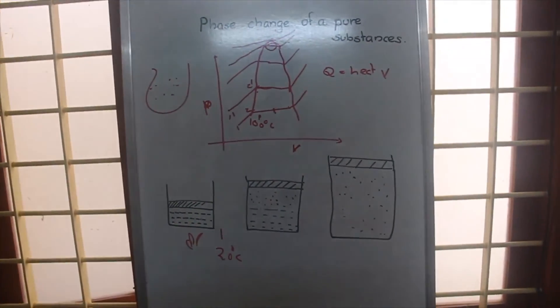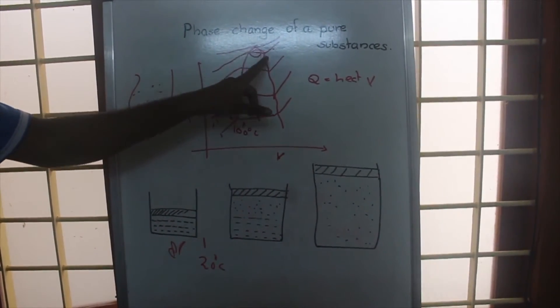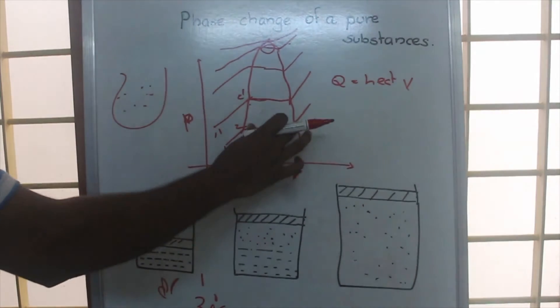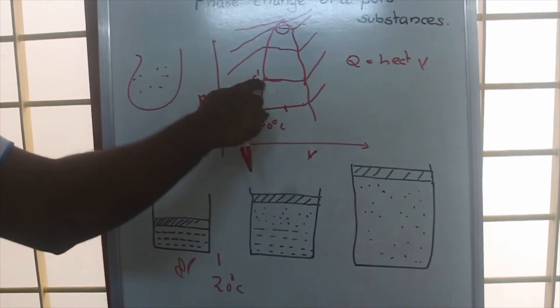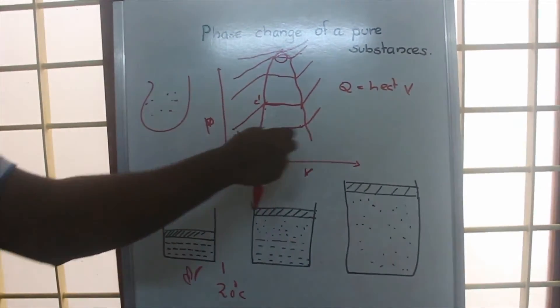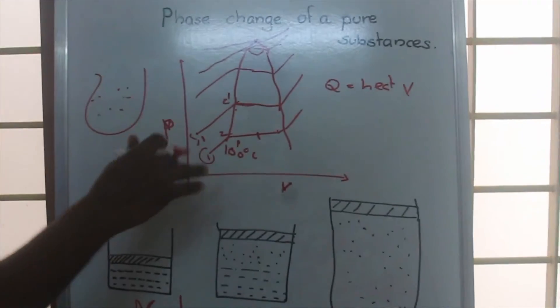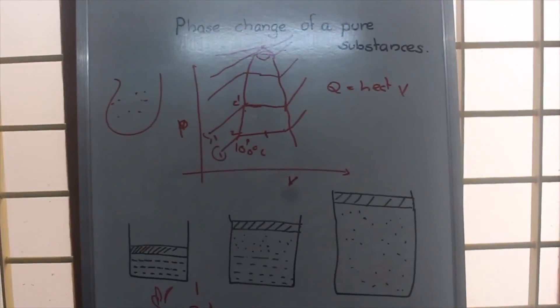This is what we call the phase change of a pure substance. Here we have obtained liquid saturation line, vapor saturation line, and there is an interface of liquid and vapor. Here only liquid exists. Here only vapor is existing. This point one, one dash, etc. can be called the subcooled region, and this is the vaporized region.